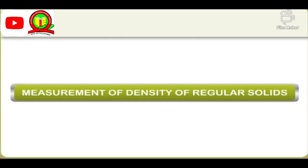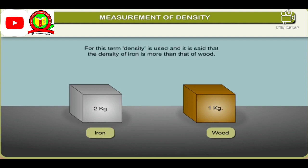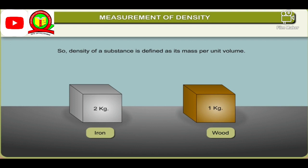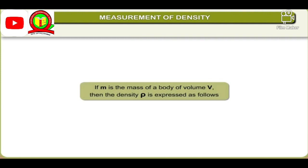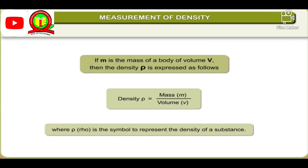Measurement of density of regular solids: It is normally said that iron is heavier than wood, meaning iron will weigh more than wood if both are of the same volume. For this, the term density is used. The density of iron is more than the density of wood. Thus, heaviness or lightness of any substance is compared by taking the same volume of each. Density of a substance is defined as its mass per unit volume. If M is the mass of a body of volume V, then density ρ = M ÷ V.